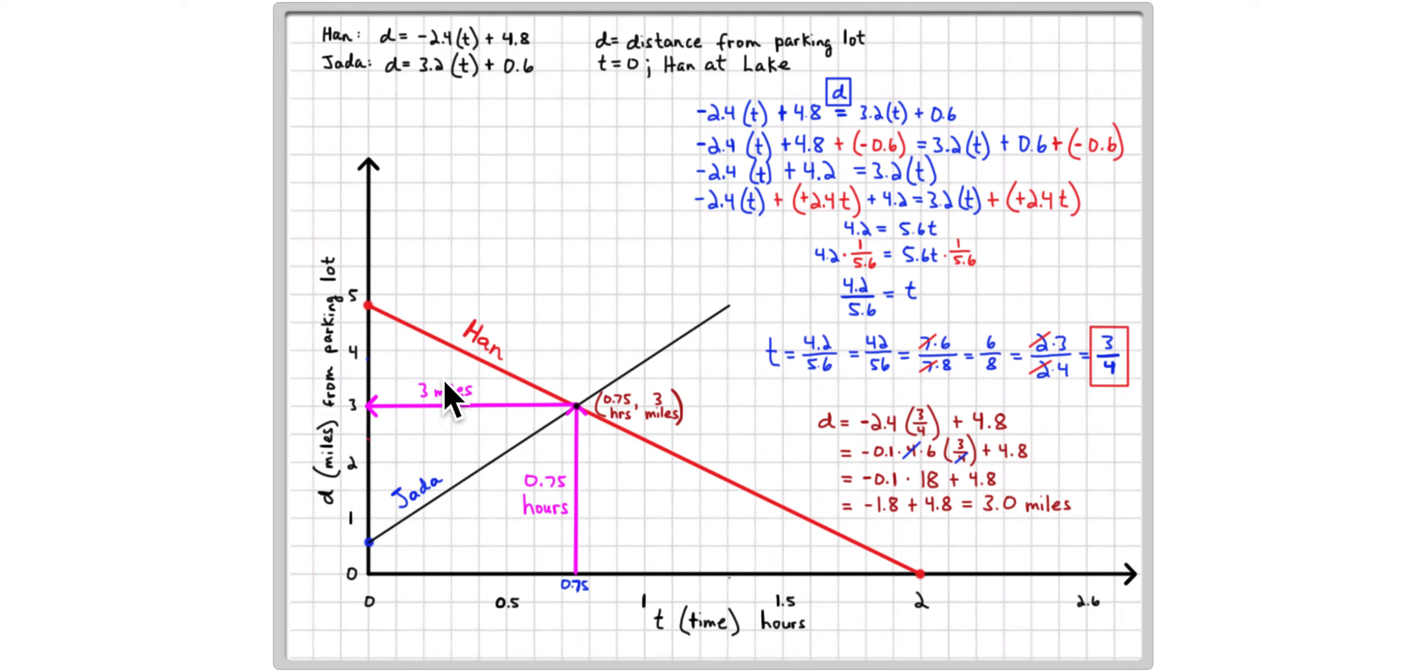But importantly, go back to the equations and as you solve the equation, show students the connection to the graphs. So this distance right here, 4 and 8 tenths minus 6 tenths is 4 and 2 tenths. That's the distance that Han and Jada are apart as they start walking towards each other. And they walk towards each other at a rate of 5 and 6 tenths miles per hour. That's the sum right here, 3 and 2 tenths plus 2 and 4 tenths.